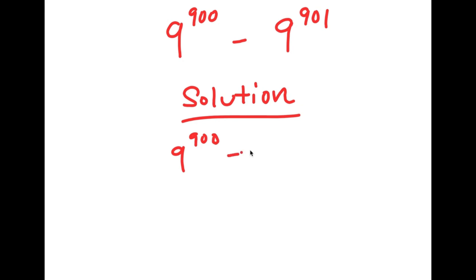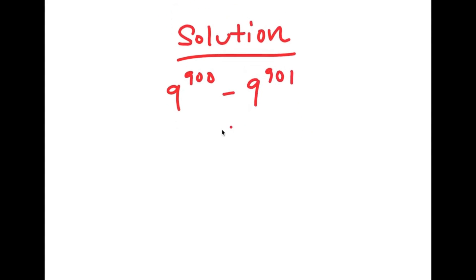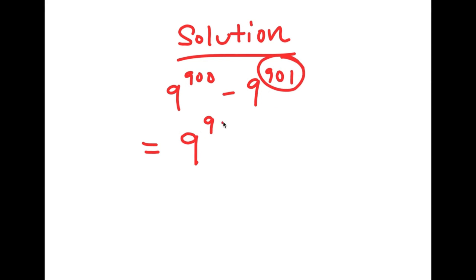I rewrite 9 to the power of 900 minus 9 to the power of 901, and now this is the same thing as — I can rewrite 901 as 900 plus 1. So this is the same thing as 9 to the power of 900 minus 9 to the power of 900 plus 1.